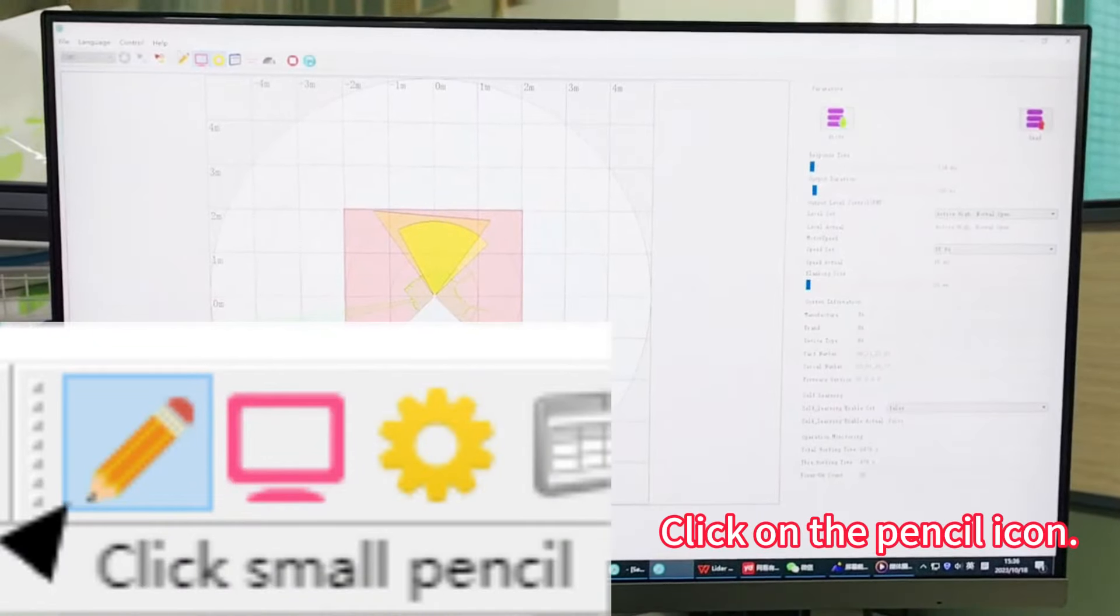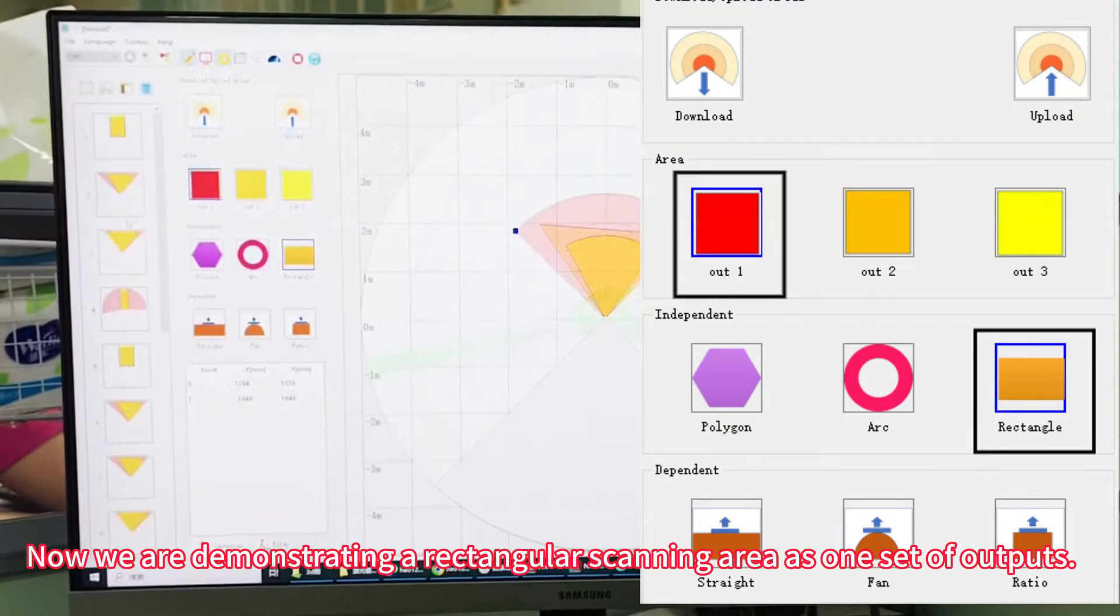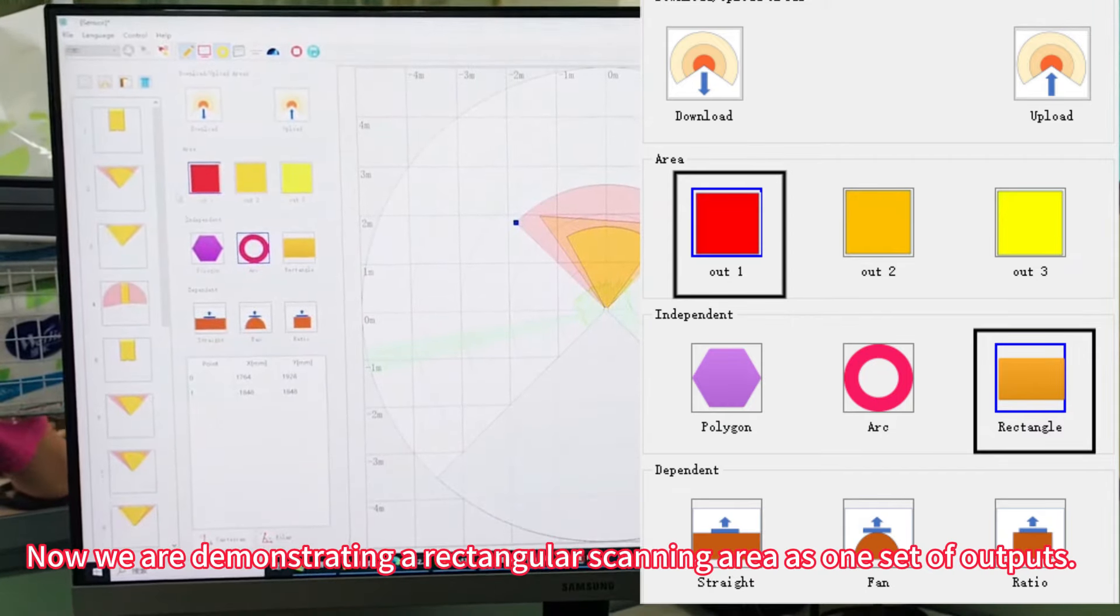Click on the pencil icon. Now we are demonstrating a rectangular scanning area as one set of outputs.